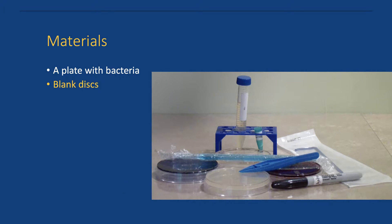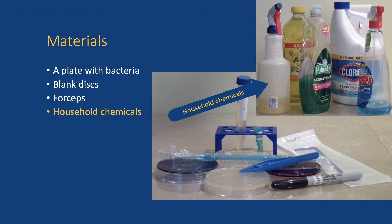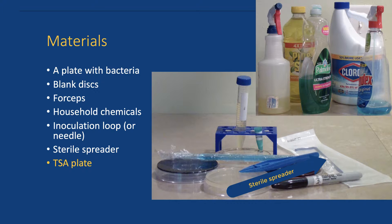You have blank discs in a small tube, forceps, household chemicals, an inoculation loop, or a needle if you're out of loops, a sterile spreader, a TSA plate, and the tube with TSB medium.